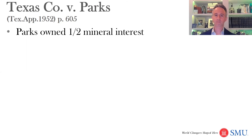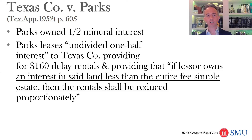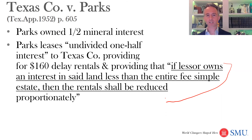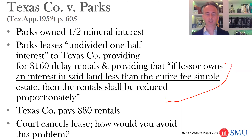Parks owned a one-half mineral interest and leased that undivided one-half interest to Texas Co., providing for $160 delay rentals — not per acre, just $160 — and providing that if the lessor owns an interest in said land less than the entire fee simple estate, then the rentals shall be reduced proportionately. Texas Co. said: they do own less than the entire fee simple estate — they only have an undivided one-half interest — so instead of getting $160, you only get $80. Texas Co. pays those $80 rentals, but the court cancels the lease.